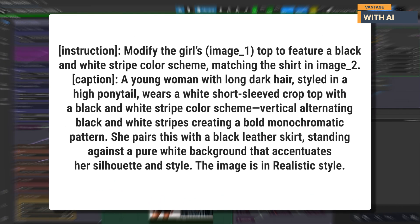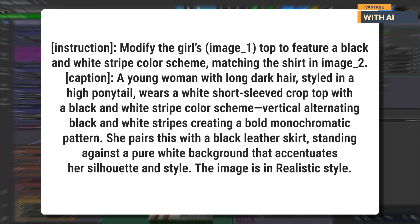Here's how the prompt enhancer formatted the prompt for edit mode. As you can see, it's structurally different from the one used in generation mode. It includes two clear sections: 'Instruction,' where it gives direct editing instructions, and 'Caption,' which defines the full scene. One important thing to note: if you provide more than two images, even when you tell the model it's an edit prompt, it still switches back to generation style formatting — and when that happens, the output ends up looking more like a generation result rather than a proper edit.